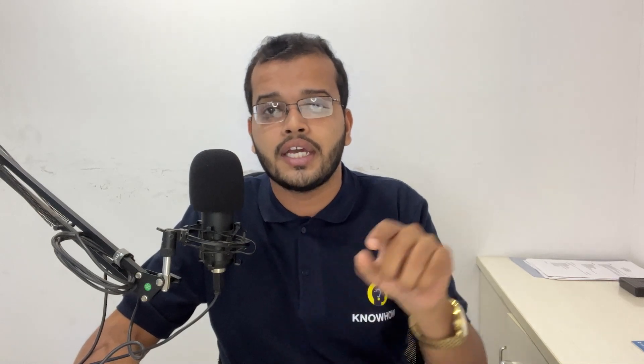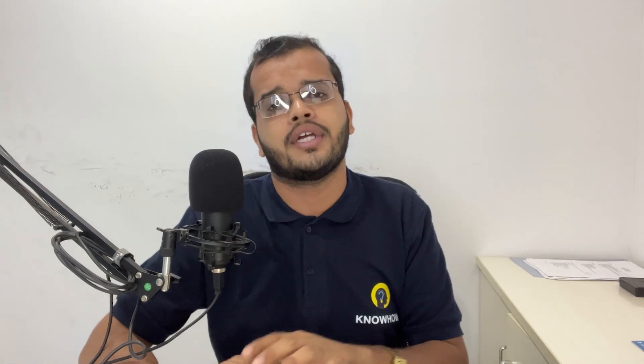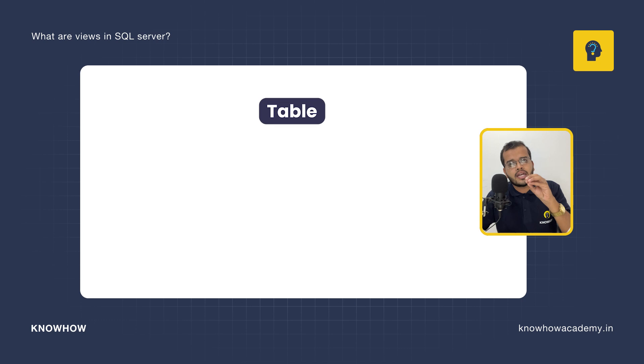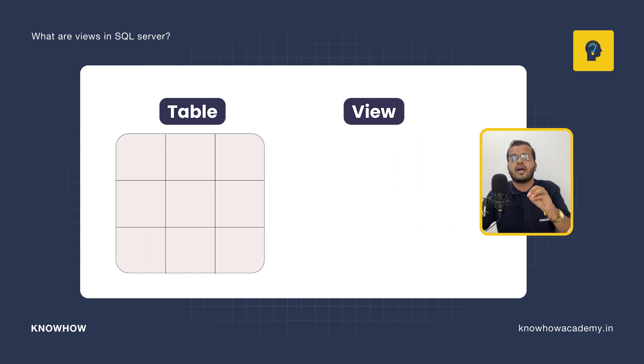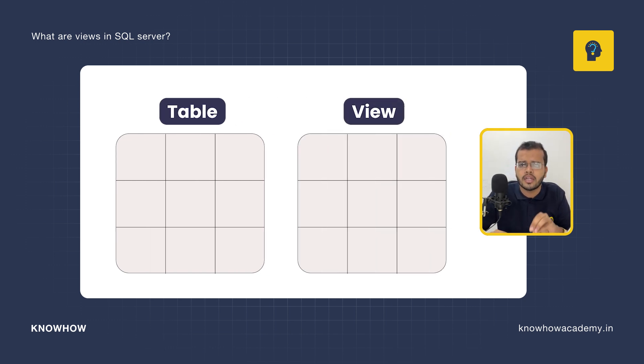When you create a table with the syntax CREATE TABLE, you give column names, data types, and constraints, and you can see that table in your database. But a view, though it is a virtual table, you cannot see it stored in the database permanently. However, in a view, just like a real table, we have records in the form of rows and columns.